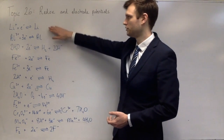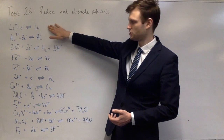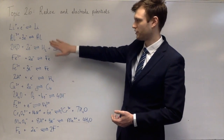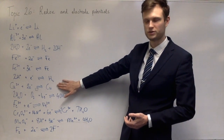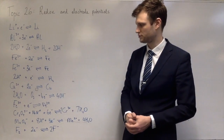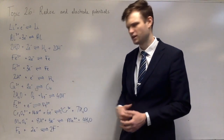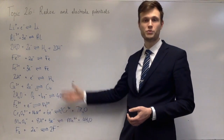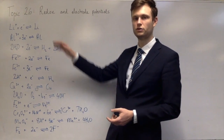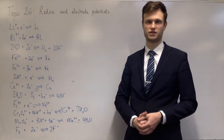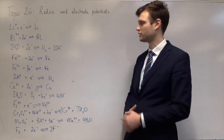You'll notice lithium, which is a reactive metal, at the top, and then further down iron, which is less reactive, and copper, which is even less reactive. This here is iron 3+ becoming iron 2+. This is by no means complete — I've just taken a handful of the different reductions that can happen and written those out in order.